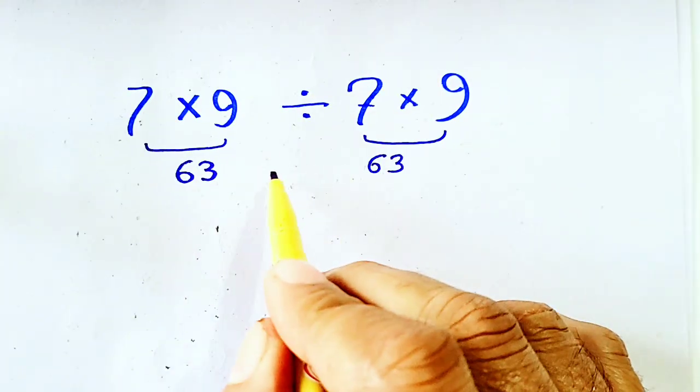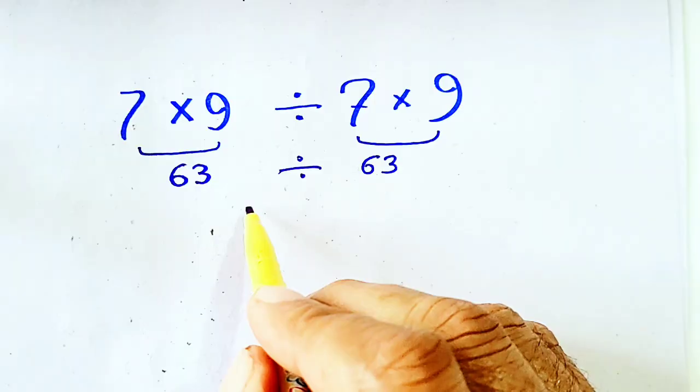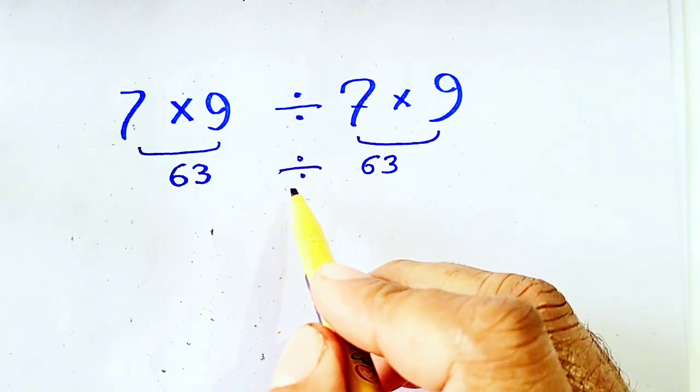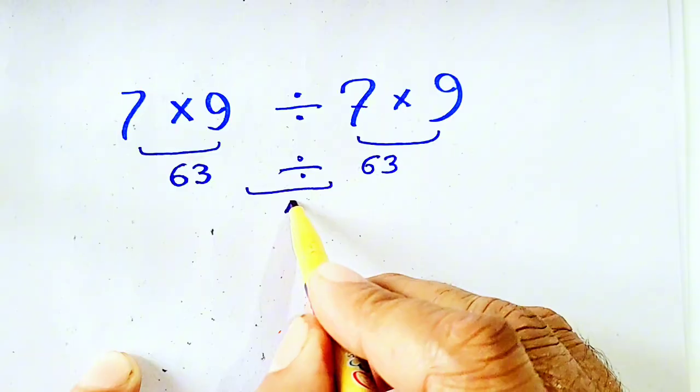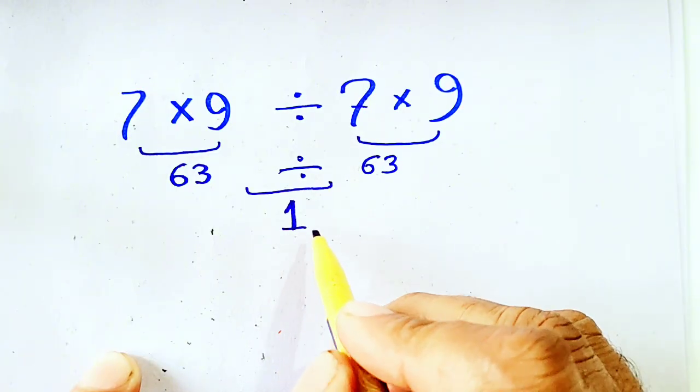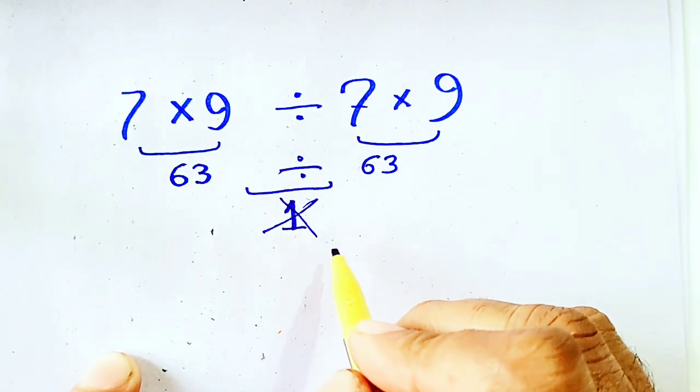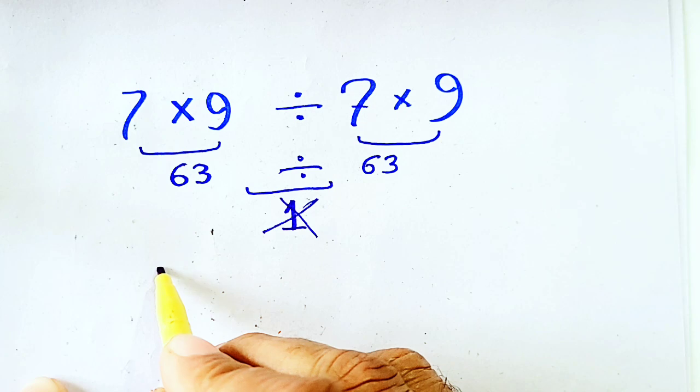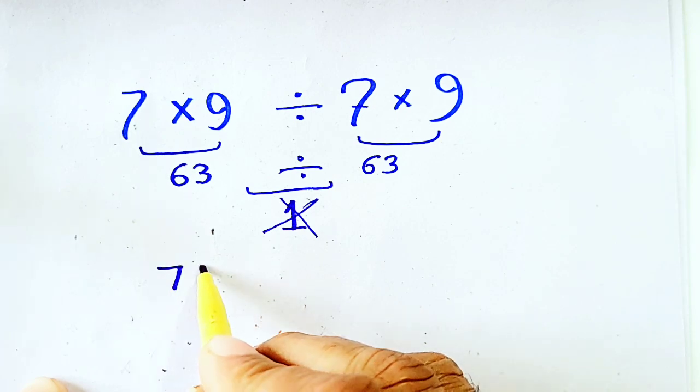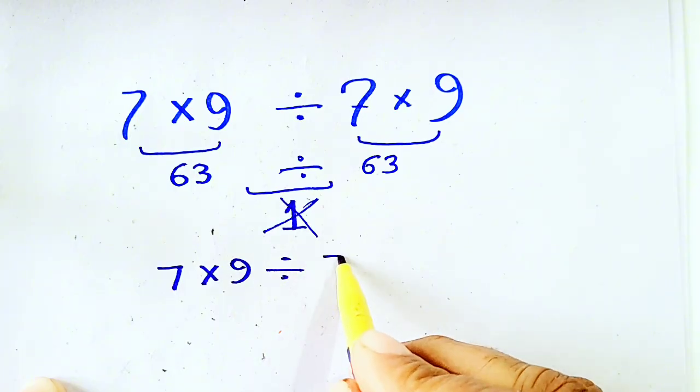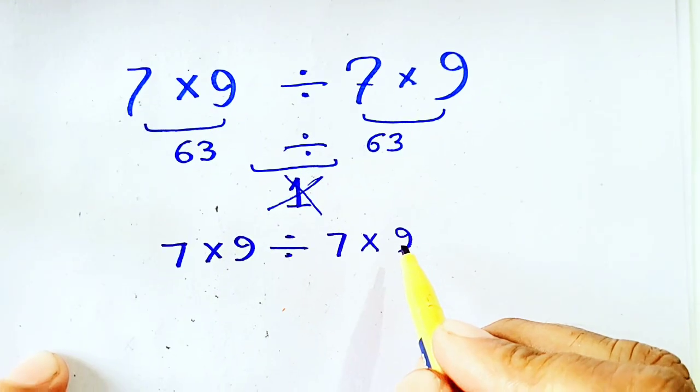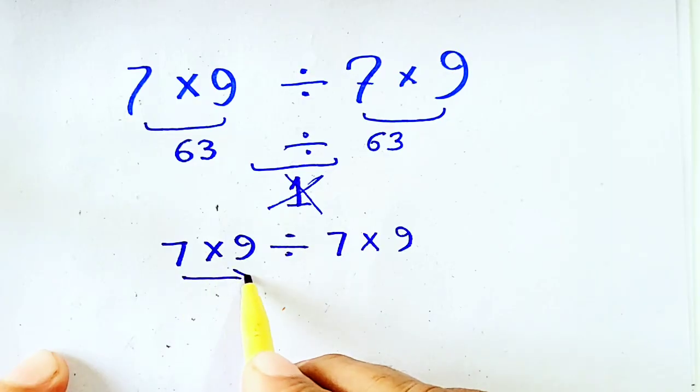In between these two numbers, here is division, so we have division. 63 divided by 63 will equal to 1. 1 is not the answer, so actually 7 times 9 divided by 7 times 9. We have to move from left to right.